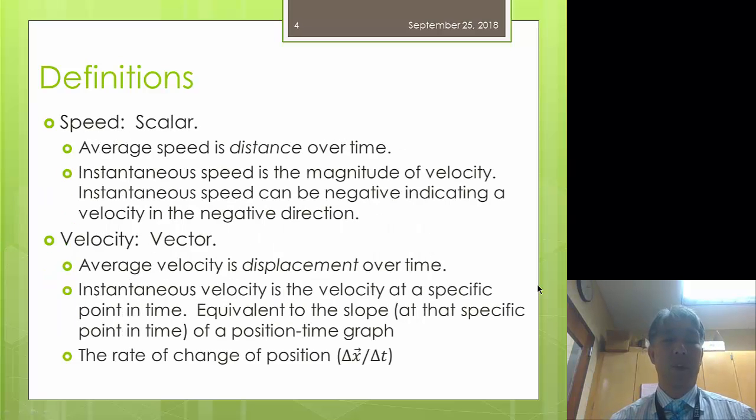So we also have the words speed and velocity. Speed being the scalar form, velocity being the vector form. When we talk about average speed, what we are talking about is the distance that a person has traveled over time. So remember, distance is a scalar and it's the total distance traveled. Instantaneous speed, however, is going to be the magnitude of your velocity. It can be negative, indicating a velocity in the negative direction.